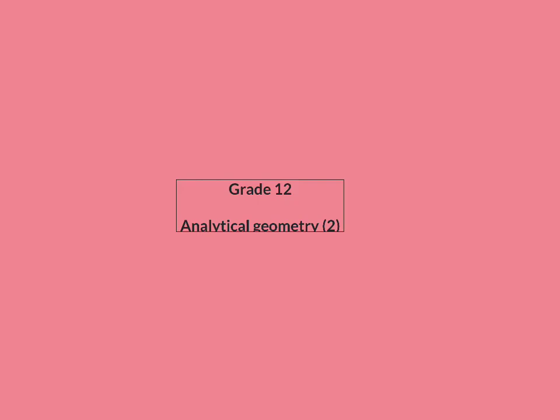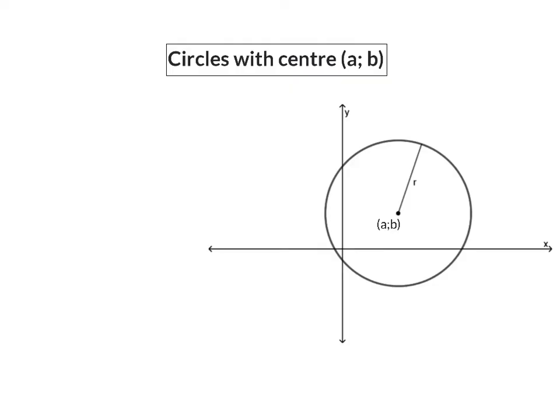In today's second lesson on analytical geometry, we're going to have a look at circles where the center is now at a specific coordinate (A, B). Here we have a circle where the center is not at the origin anymore, but has moved to a specific coordinate (A, B). To calculate the equation for this circle, we are going to focus on our radius and try to determine its length using Pythagoras.